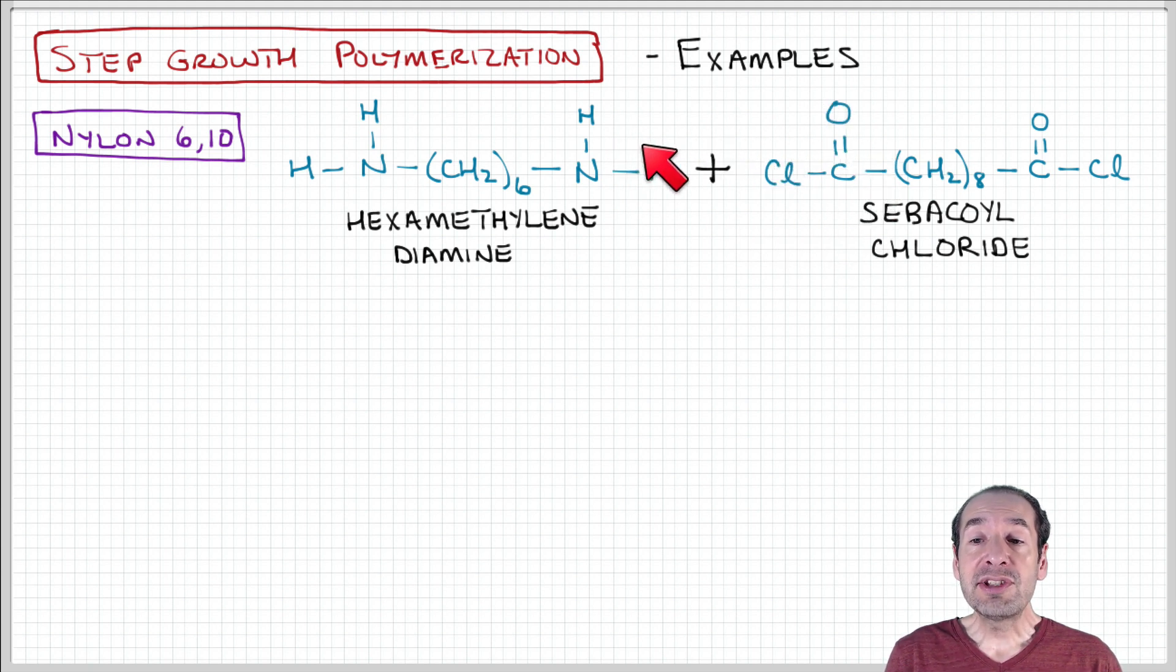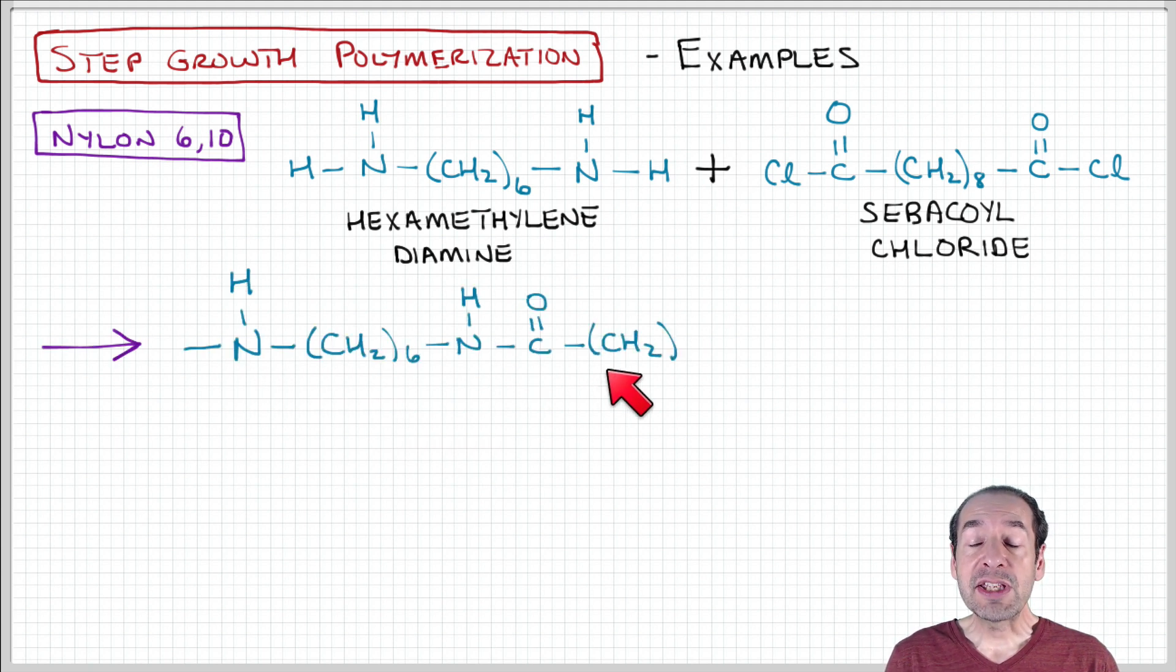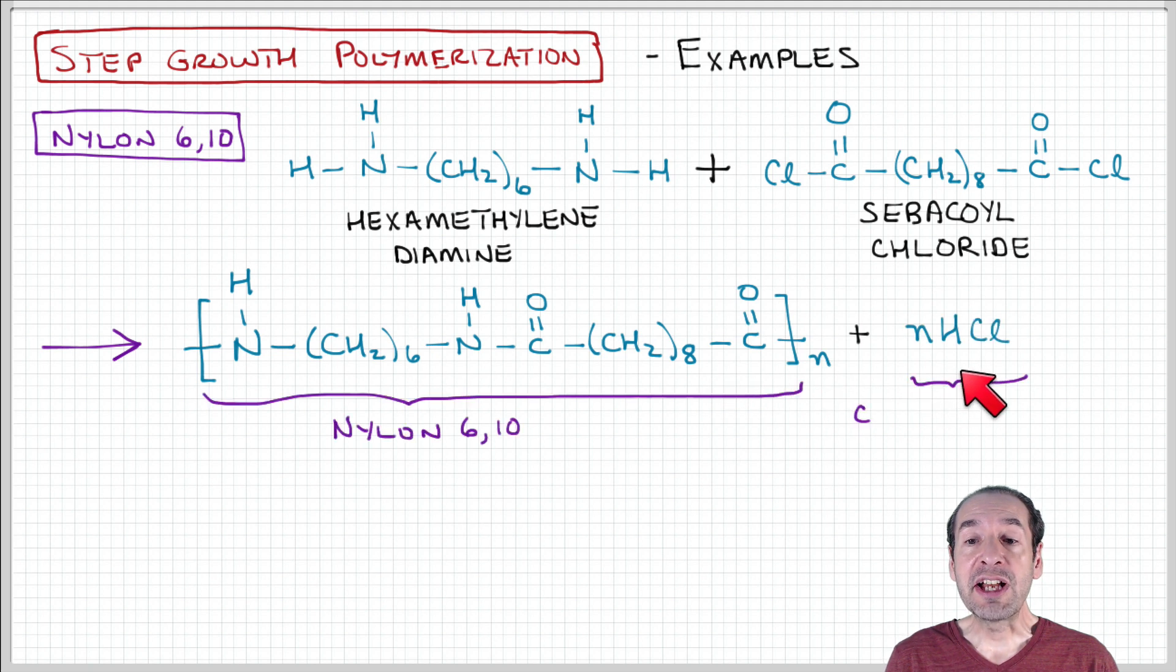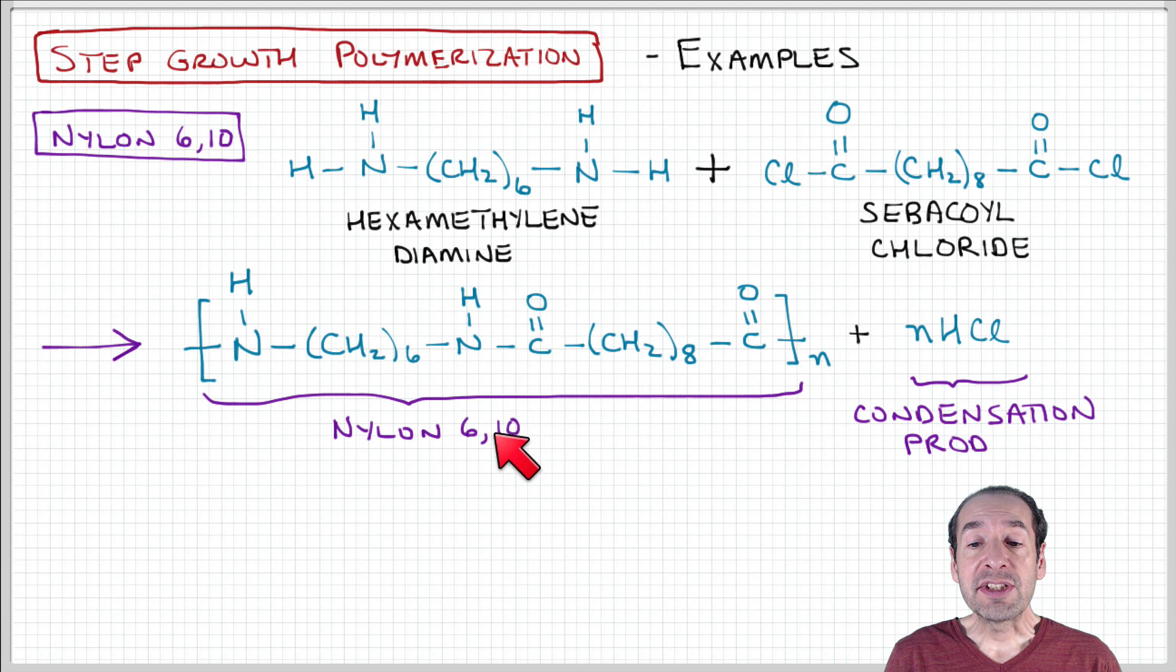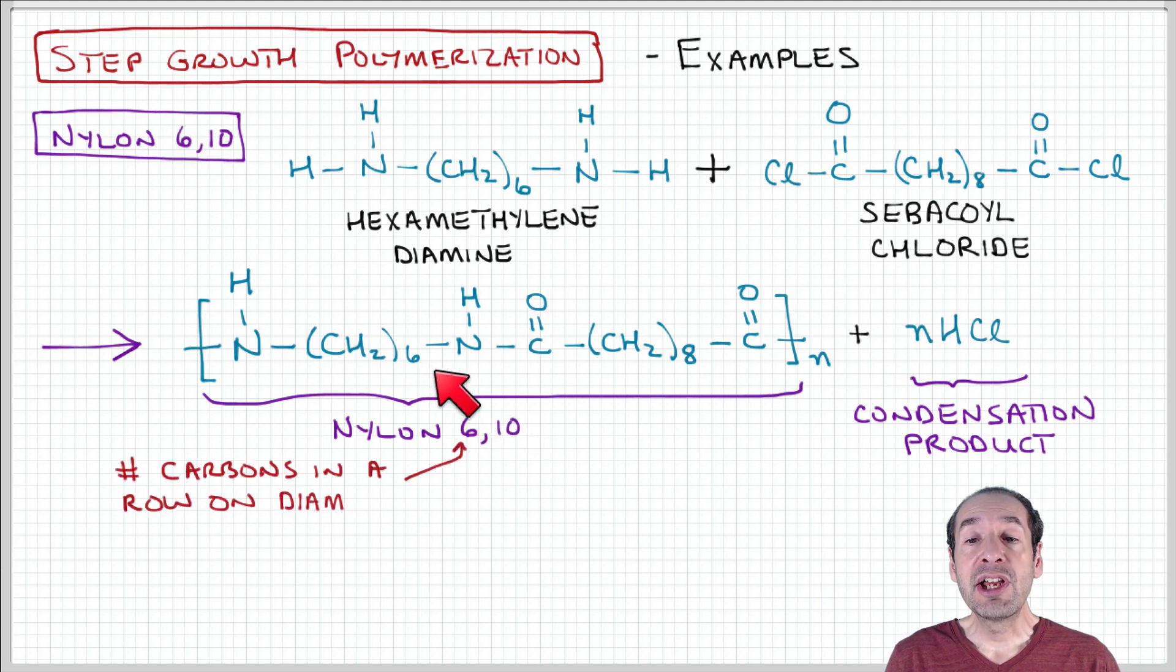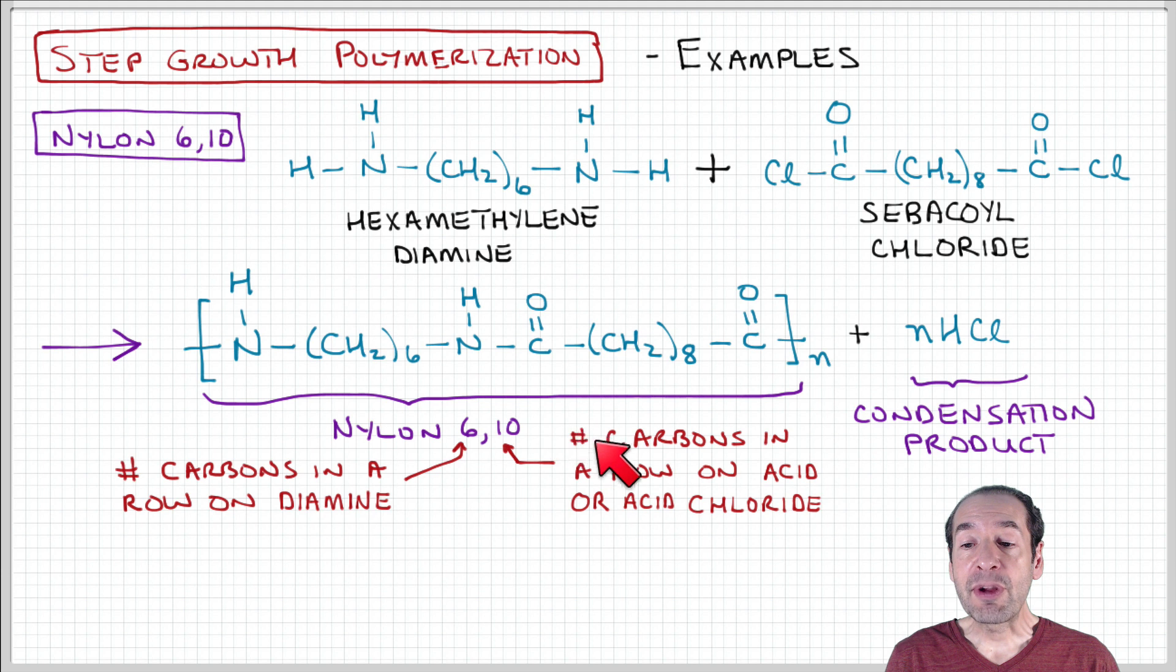So these two functional groups then combine to produce this repeat unit plus a condensation product of HCl. This repeat unit then is designated as nylon 6,10 because the first digit represents the number of carbons in the amine group containing monomer. And the second digit represents the carbons in the acid or acid chloride. So we have eight carbons plus two is 10. So this is designated as nylon 6,10.